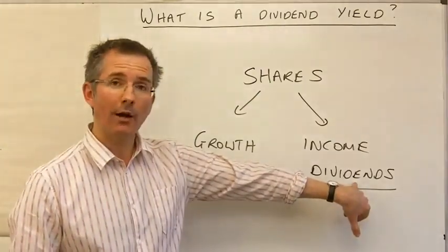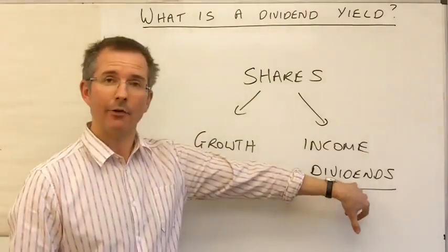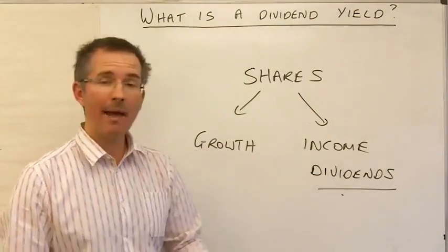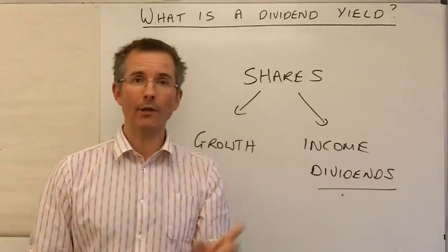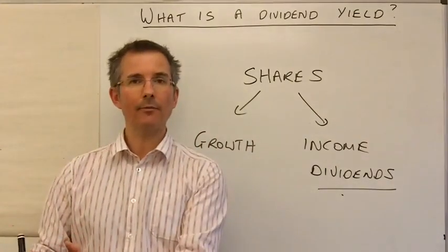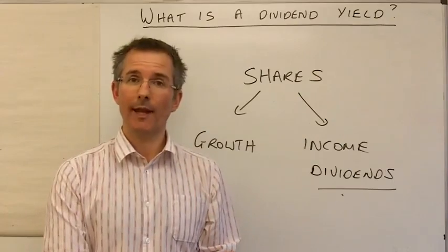Secondly, they normally pay them in two chunks. So you hear interim dividends being declared and final dividends being declared. And the amount you get in total for one year is a combination of that halfway stage dividend and the final or full-year dividend.